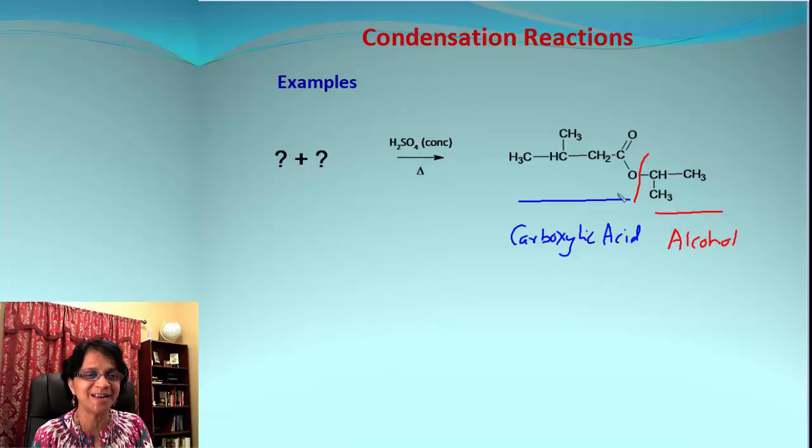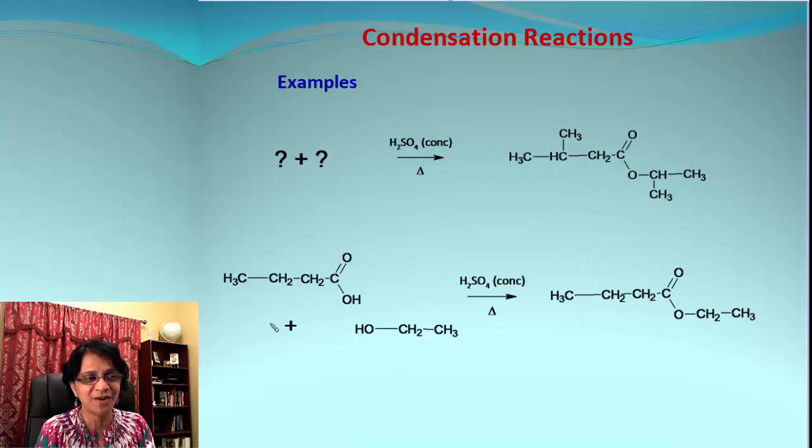and the part that includes carboxyl group is coming from carboxylic acid. So what would be the starting materials for that? Of course it's going to be the compound which is butanoic acid, and this is the alcohol, so it will be ethyl alcohol or ethanol.